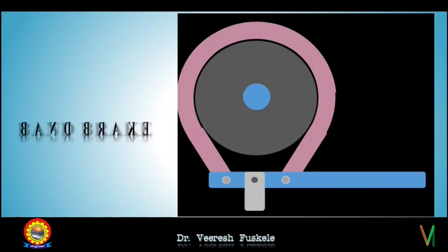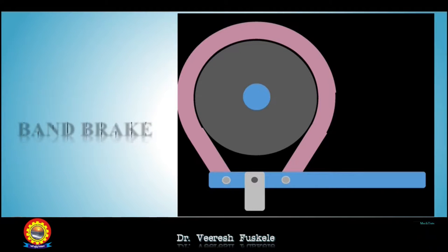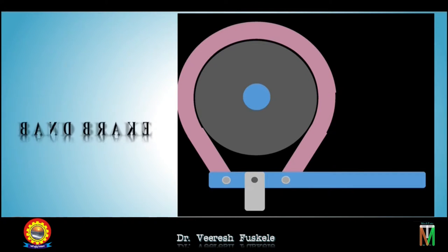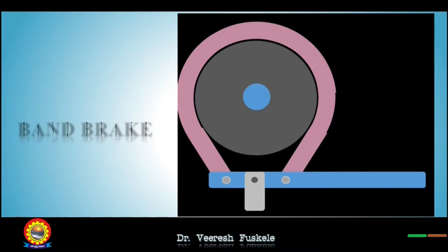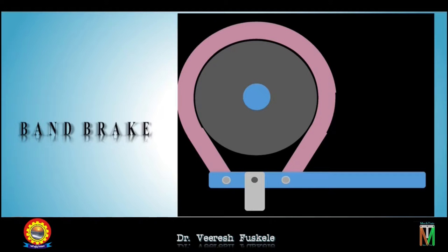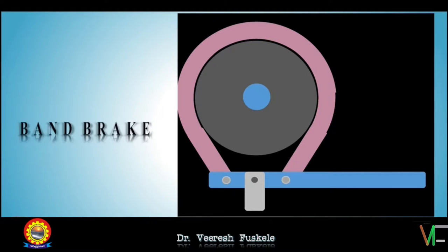What is a self-locking brake? When the force needed to apply the brake is virtually zero — that is, once contact is made between the block and the drum, the brake applies itself — such a brake is known as a self-locking brake. What is a self-energizing brake? When the moment of the friction force about the pivoted point is in the same direction as the applied force, the frictional force aids in applying the brake; this type is known as a self-energizing brake. These definitions will be better understood during the analysis of brakes.